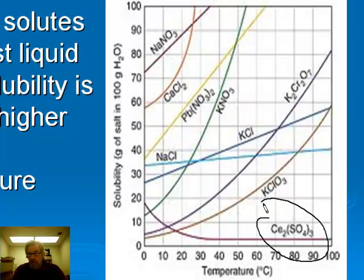Sodium chloride looks pretty flat on the graph — it increases a little bit, but compared with many of the substances on the chart, there isn't much of a temperature effect. But for nearly all solid solutes, and also for a lot of liquid ones, the solubility is higher at higher temperatures because the solution process is, in general, endothermic.